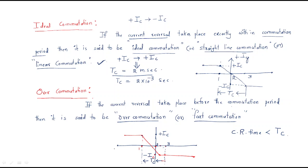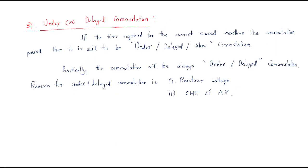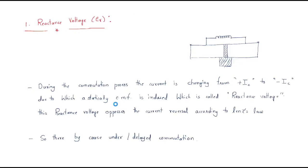Next is under commutation or delayed commutation. Just observe here — this is a different scenario. If the time required for the current reversal is more than the commutation period, if it is higher than the commutation period, then it is said to be under, delayed, or slow commutation.